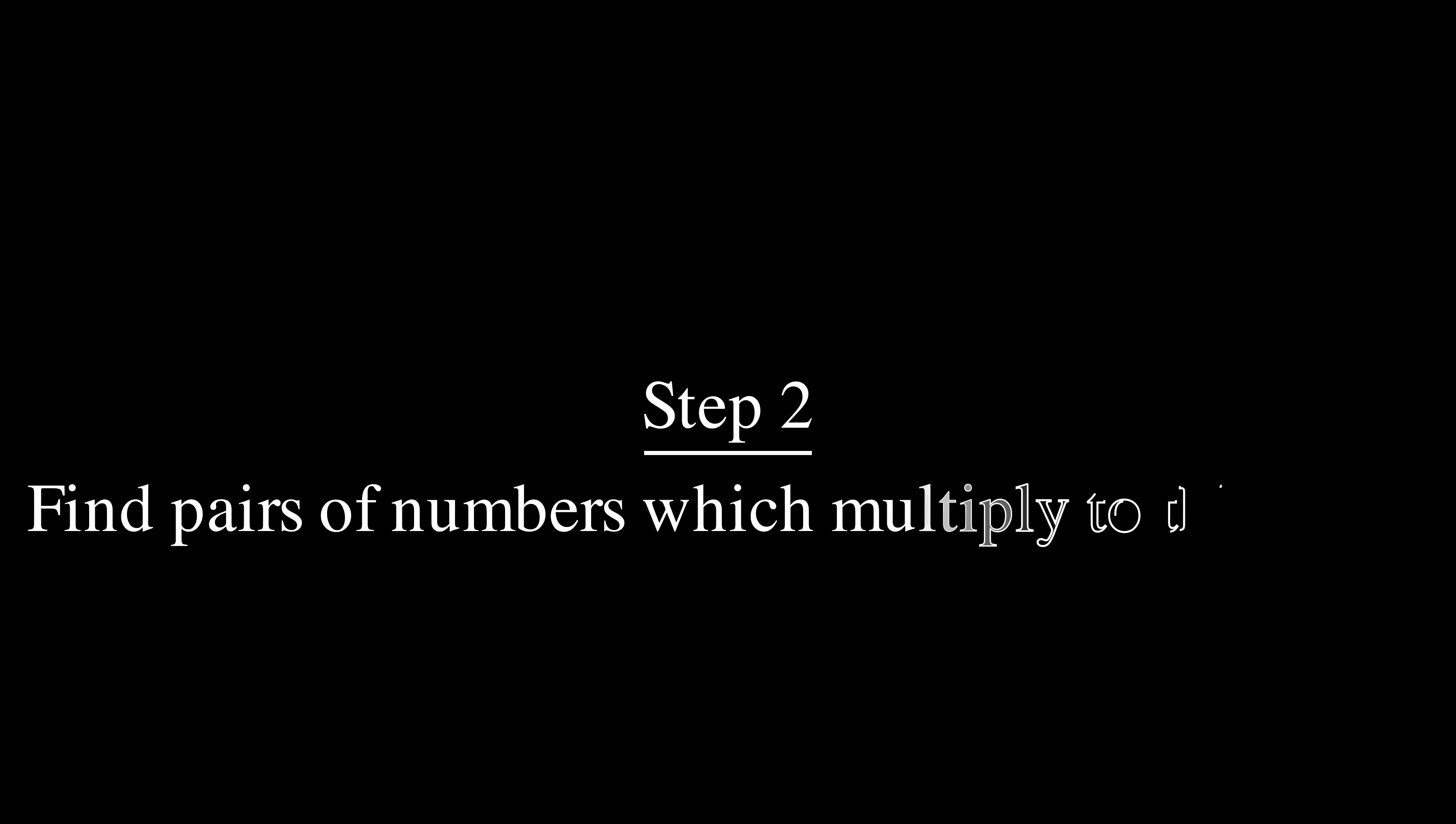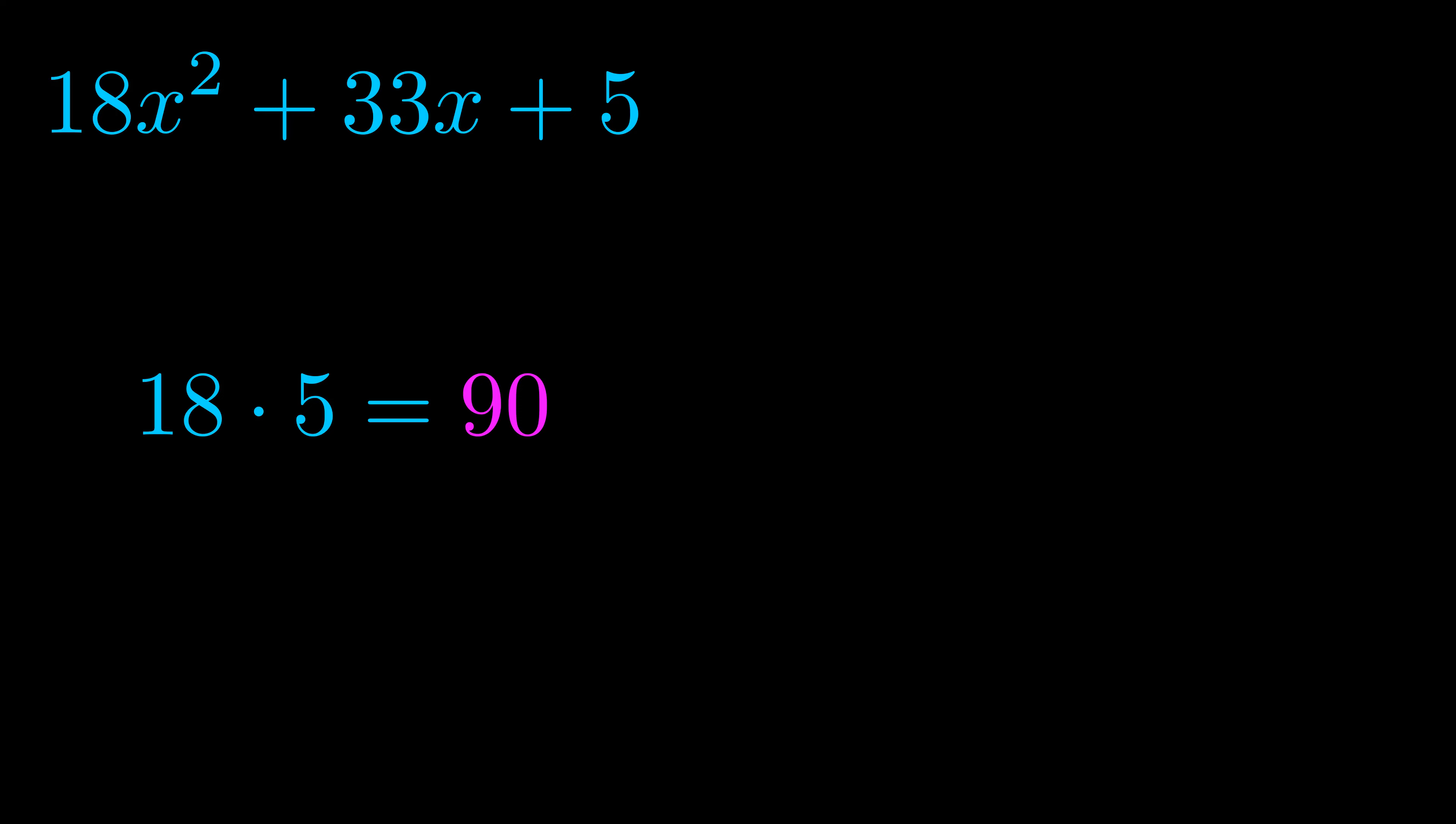Step two is to try to find all of the pairs which multiply to this number. Now it turns out you don't really need to find all of them but go ahead and write down as many numbers as you can that multiply to the magenta value for now. Pause the video and resume when you're ready to continue.